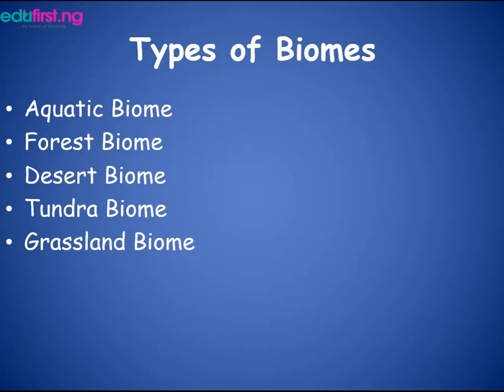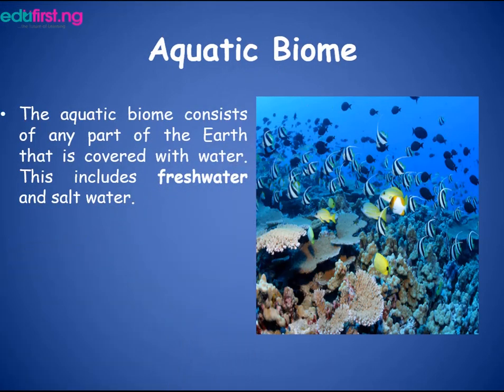Talking about the first, which is the aquatic biome — the aquatic biome consists of any part of the earth that is covered with water. This includes fresh water and salt water.